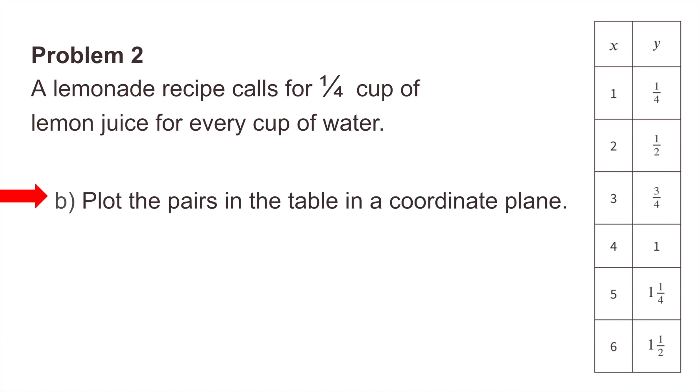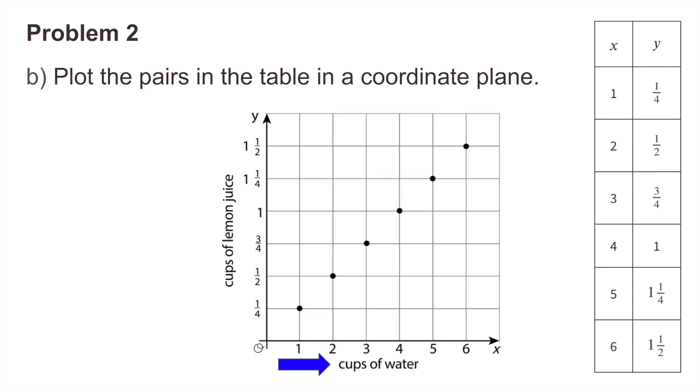Part b: plot the pairs in the table in a coordinate plane. The x-axis represents cups of water. The y-axis represents cups of lemon juice.